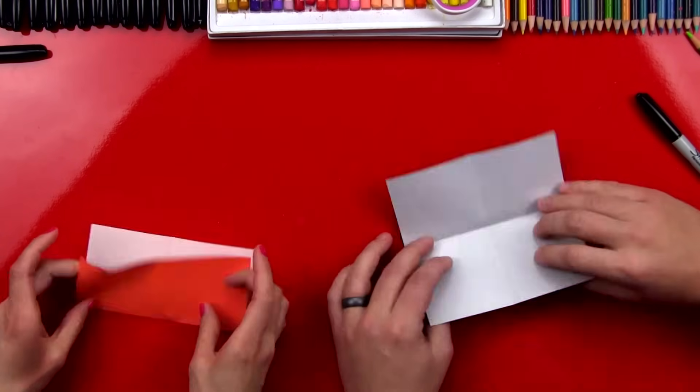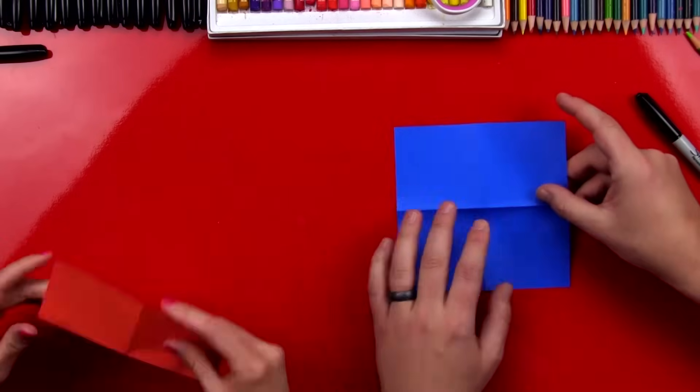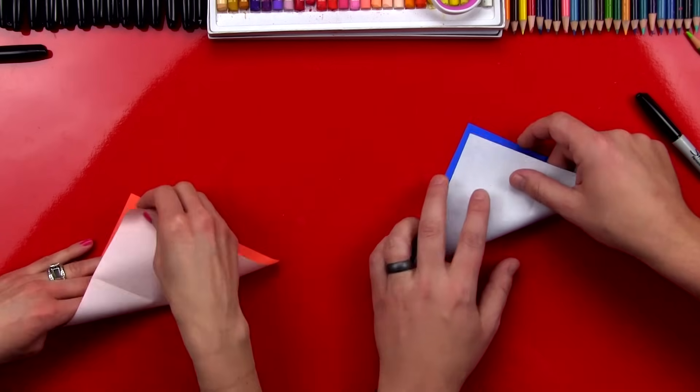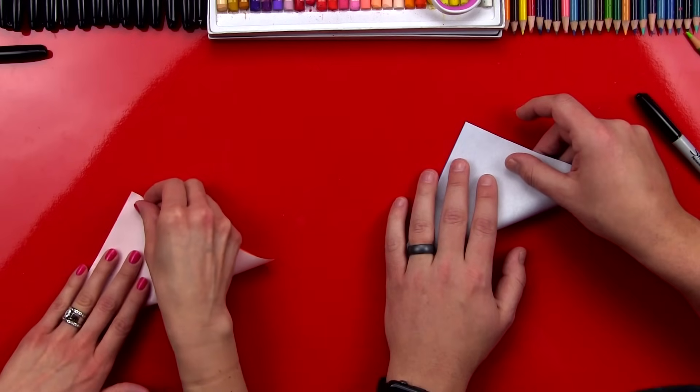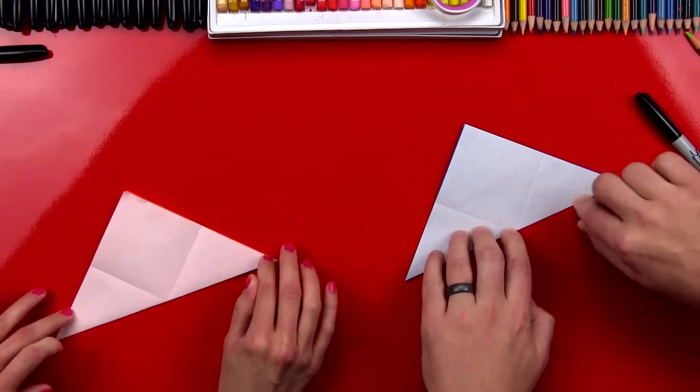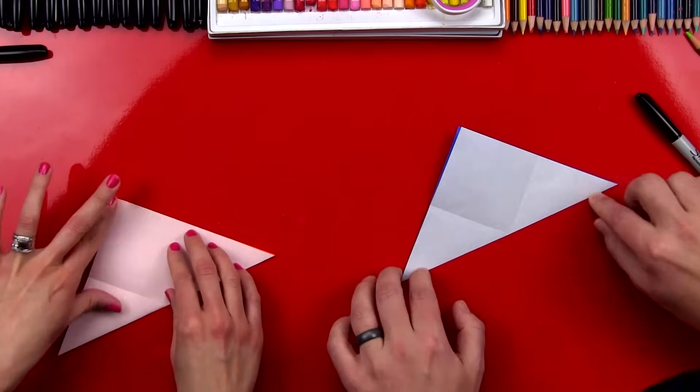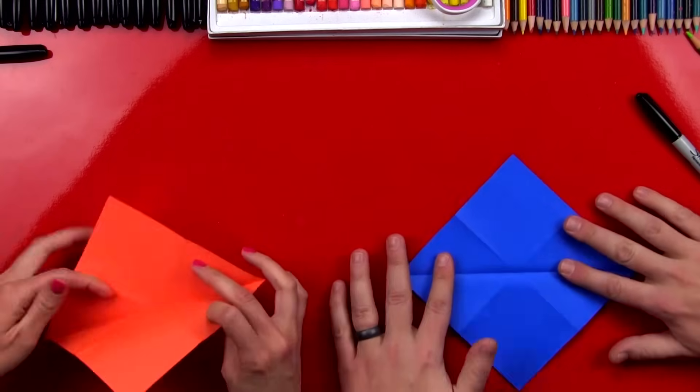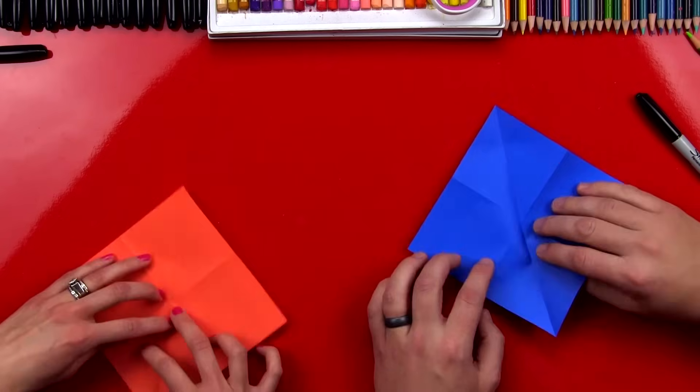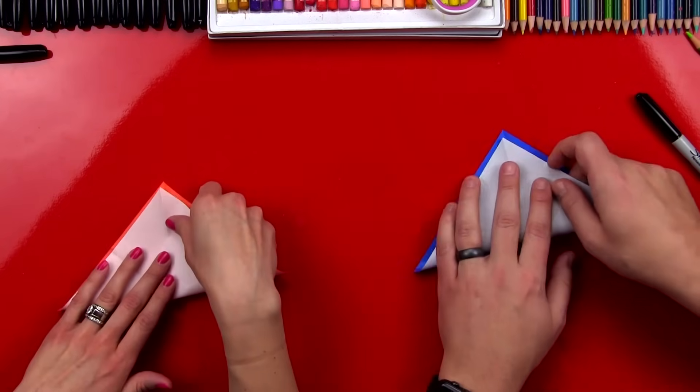Alright, then we can open it up. And then we're gonna flip it over. And then we're gonna take this corner and fold it up to the top. Like this. I think the kids are gonna be really jealous that you're in the video. They don't even know. They're at school. Okay, then we can open it up. And then we're gonna turn it this way. And then we're gonna fold this corner up to the top. We're just repeating the same steps.